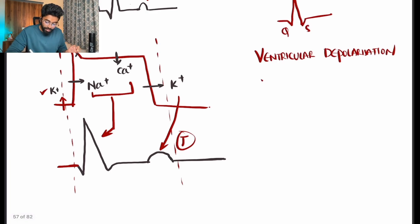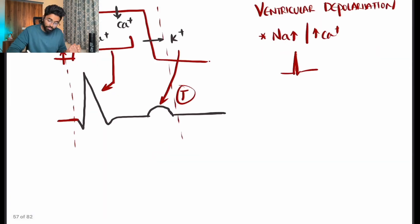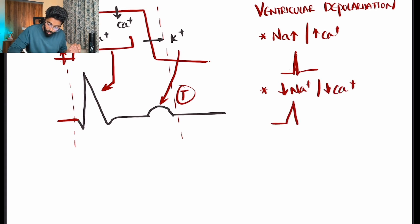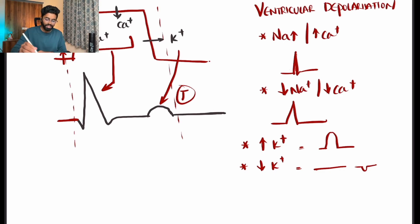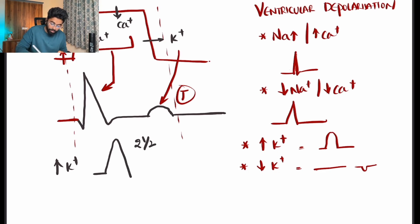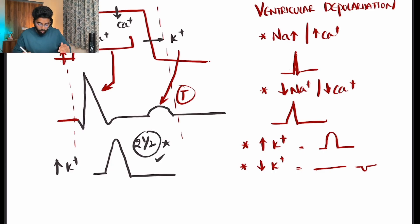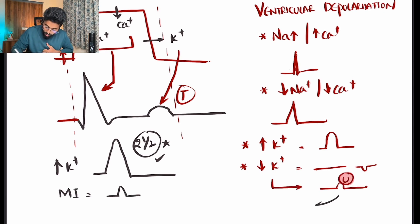If there is hypernatremia or hypercalcemia, we get a narrow QRS. If there is hyponatremia or hypocalcemia, we get a broad QRS. With hyperkalemia, we see tall T waves. With hypokalemia, we see flat or inverted T waves. To distinguish hyperkalemia from MI: in hyperkalemia, the T wave should be more than two and a half large boxes; if it is less than two boxes, it is more likely an MI T wave.